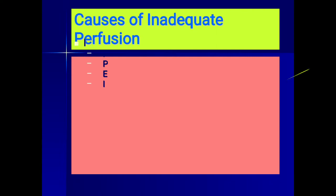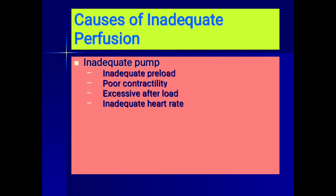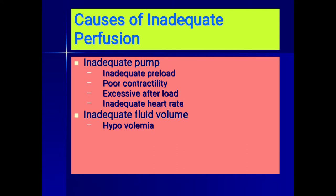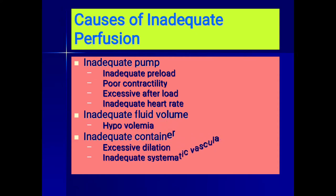Causes of inadequate perfusion can be an inadequate pump due to inadequate preload, poor contractility, excessive afterload, or inadequate heart rate. Inadequate fluid volume can cause hypovolemia. An inadequate container results from excessive dilation and reduced systemic vascular resistance. The arterioles — called resistance vessels — maintain resistance in the circulatory system. When this resistance is lost and the arterioles dilate, the container becomes inadequate and shock can occur.